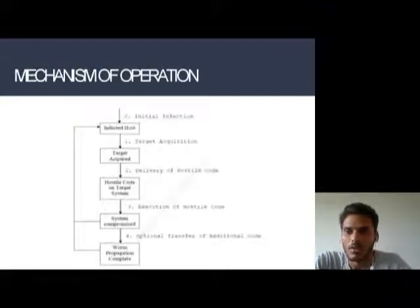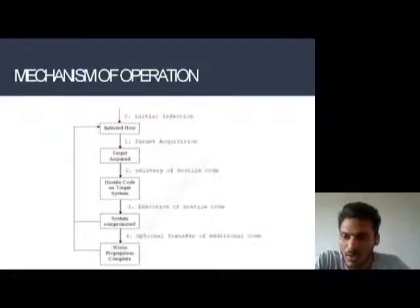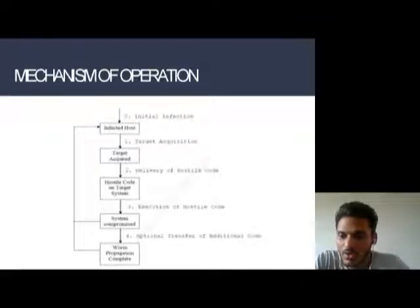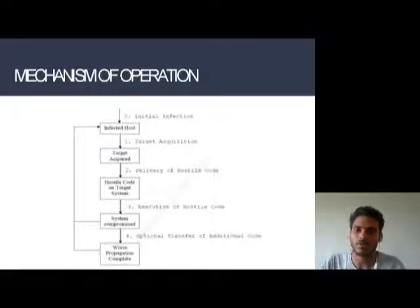Next, the mechanism of operation. There are four stages: first, initial infection, which infects the host; second, target acquisition; third, delivery of payload code; and fourth, execution of payload code, or operational transfer to additional code. These are the mechanisms by which worms affect our system or networking programs.